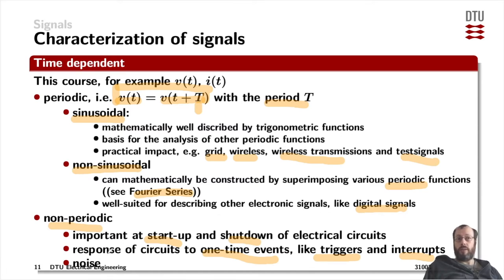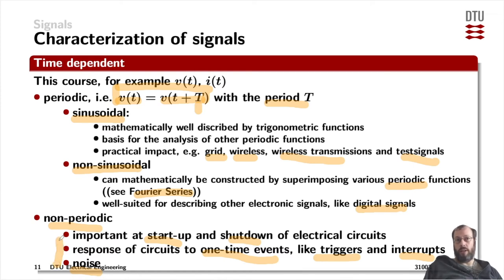A very different kind of non-periodic signal is noise. A very intrinsic definition of noise is that it has to be non-periodic — it cannot have a frequency. As soon as you can find a frequency for any signal, it cannot be noise.